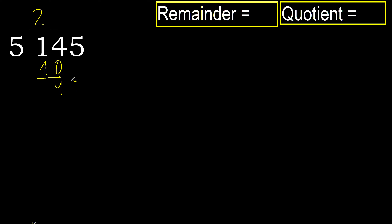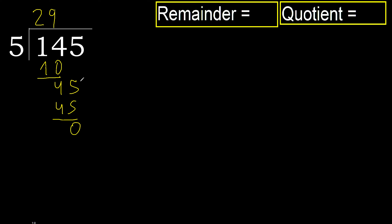Next: 45. 5 multiply by 9 is 45 — 45 is not greater. Subtract. 0.